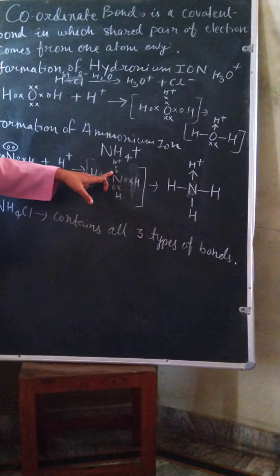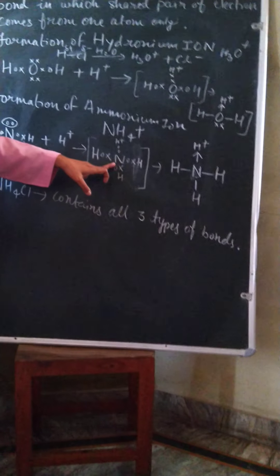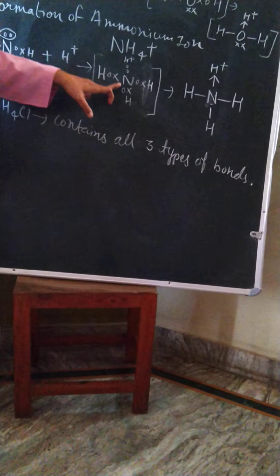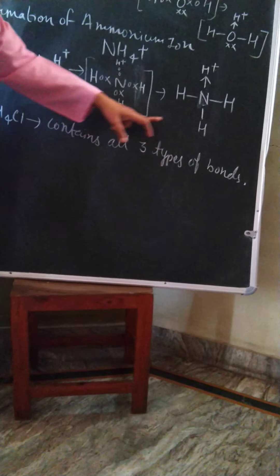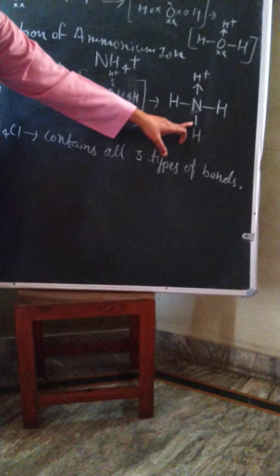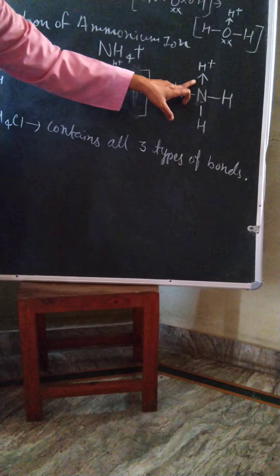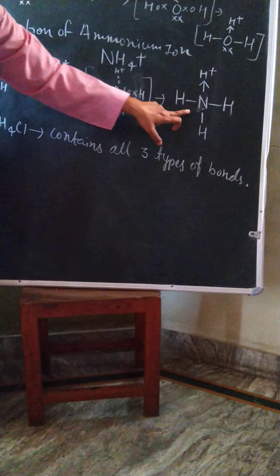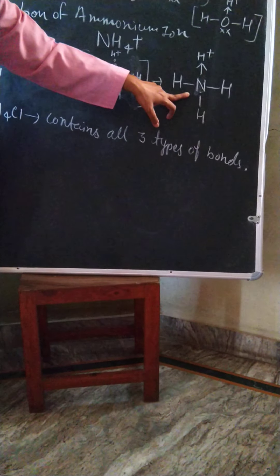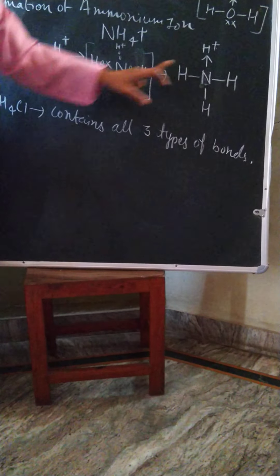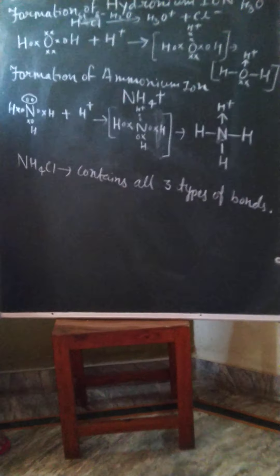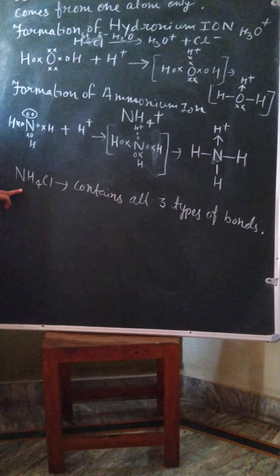In the dot-and-cross diagram, the three N-H covalent bonds each show one cross and one dot. But the new coordinate bond shows two dots, because the shared pair of electrons is contributed only by the nitrogen atom and shared with H+. In the final structure of ammonium ion, there are three covalent bonds of ammonia plus one coordinate bond between N and H+, and there is no lone pair of electrons left on nitrogen.